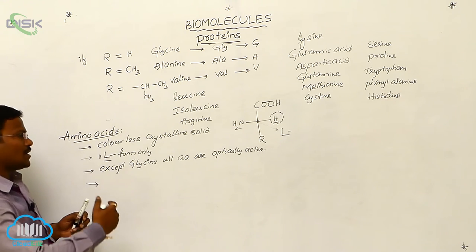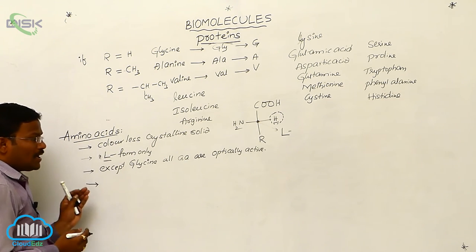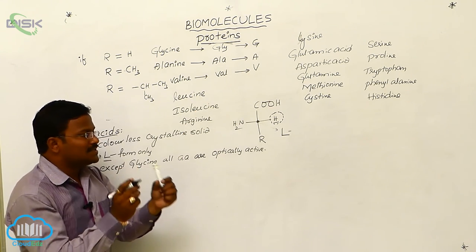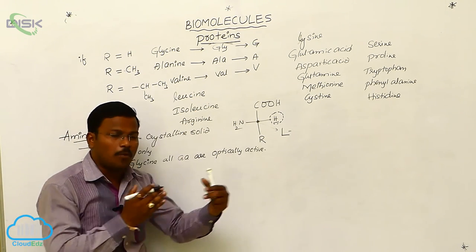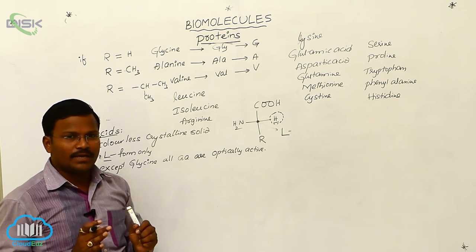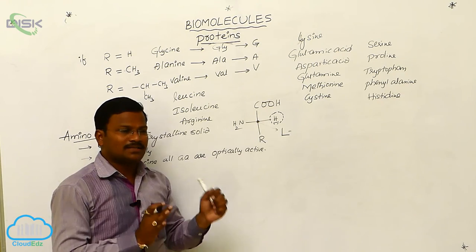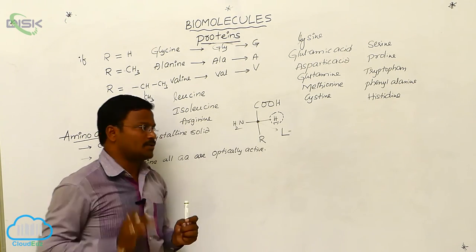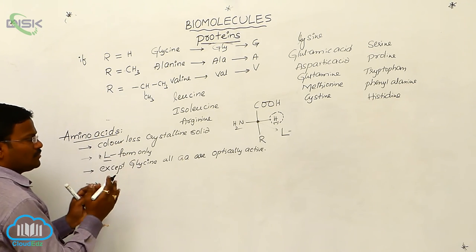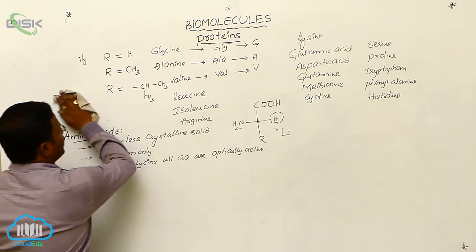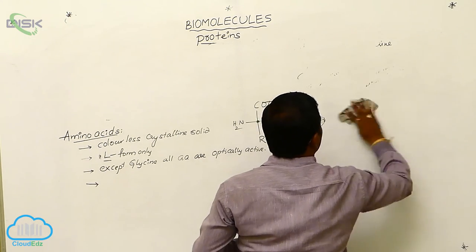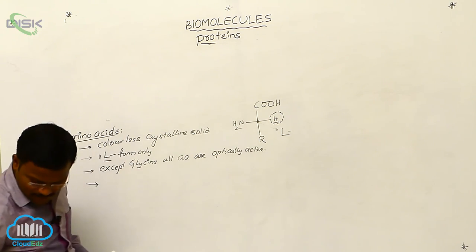These amino acids react with each other: one amino acid's acid functional group reacts with another amino acid's amine functional group to form C=O–NH type bondings between two amino acids. Such bondings are called peptide bonds. These appear to be amide bonds, and indeed they are amide bonds, but in the case of amino acids such amide bonds are specifically called peptide bonds. We will next explore how amino acids react with each other to form these peptide bonds.